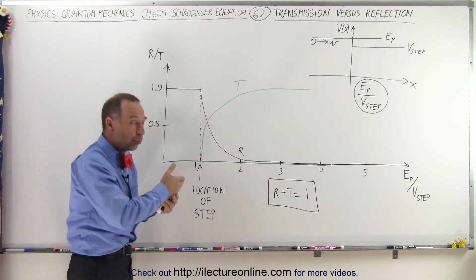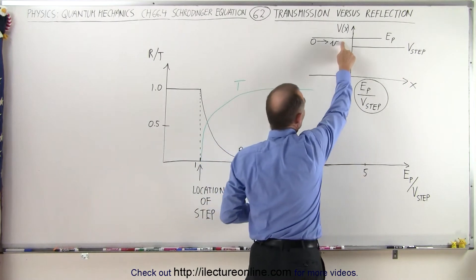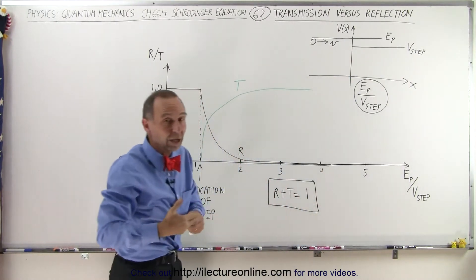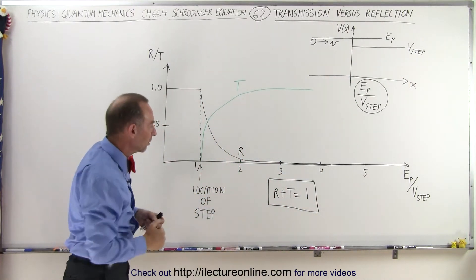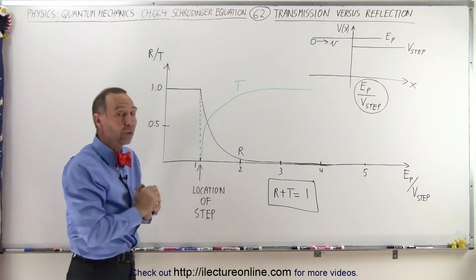So if that ratio is greater than 1, we have a situation the way we have it drawn here. So normally we would expect 100% of the particles to be transmitted. As we can see here, that's not going to be the case.